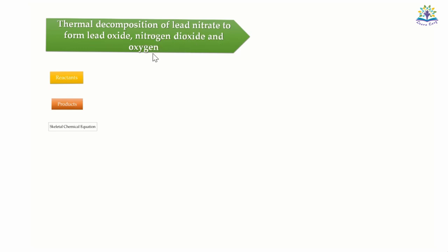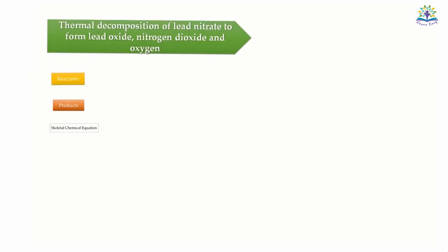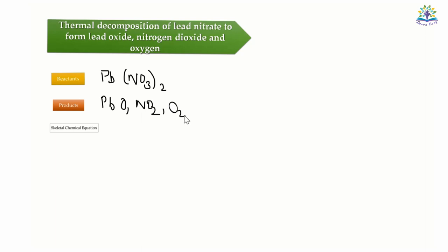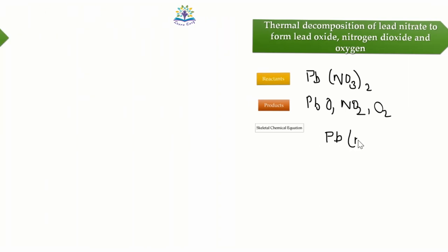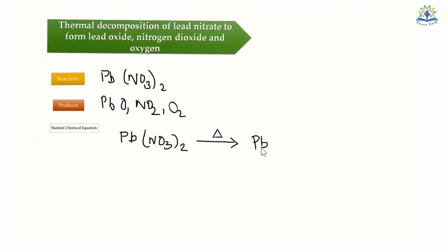Let's see another example to balance a chemical equation. The reaction here is thermal decomposition of lead nitrate to form lead oxide, nitrogen dioxide, and oxygen. The formula for lead nitrate is Pb(NO3)2, for lead oxide is PbO, nitrogen dioxide is NO2, and oxygen is O2. Since there is only one reactant, we will not add the plus symbol on the left side. Whereas here there are multiple products, so we will connect them with a plus symbol. I am going to add this arrow symbol to connect the reactants and products.